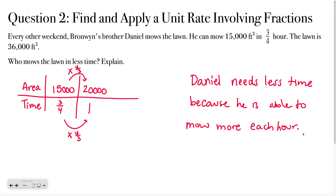For this problem, hopefully you said that Daniel takes less time. We know this because Daniel can mow 20,000 square feet in one hour, whereas Bronwyn can only mow 18,000 square feet in one hour. So Daniel's speed is faster, meaning he needs less time.